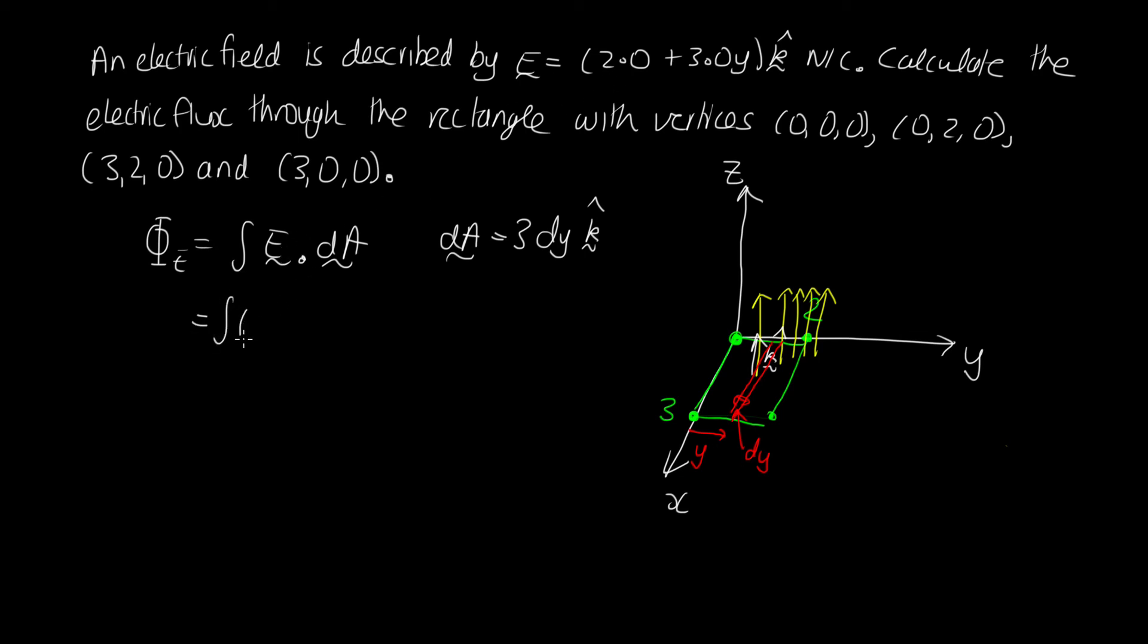So we've got E, which is (2+3y) times dA, which we've said is 3dy. Now we've got the dot product. And E is in the k-direction, and dA is also in the k-direction. So when we take the dot product of those two things, we just get 1.